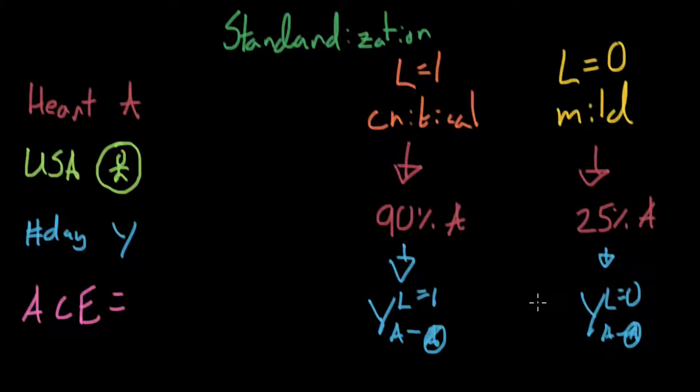However, you might be interested or hospitals might be interested, maybe US policy might be interested, in what the true average causal effect is. And in fact, we can't figure out what the average causal effect is with just this information. Instead, we need one more piece of information. The piece of information we need is what percent of the entire population is critical and what percent of the entire population is mild.